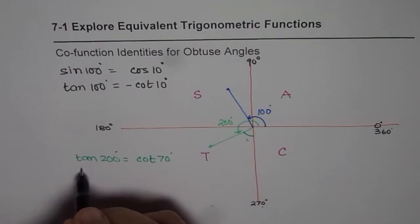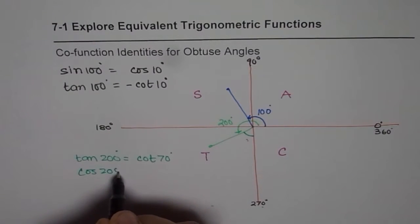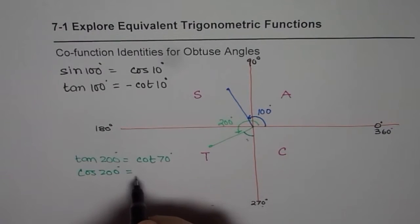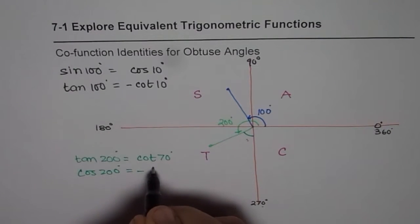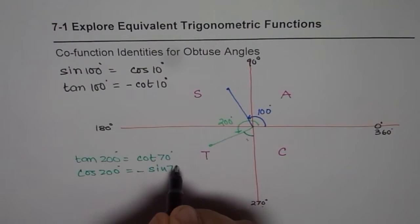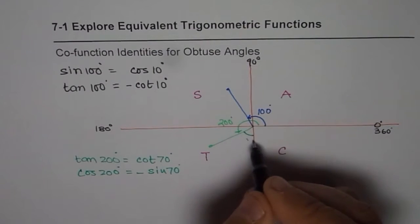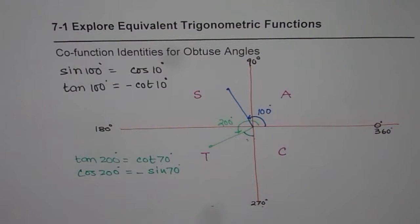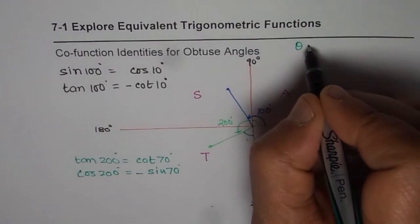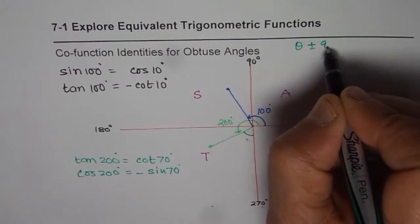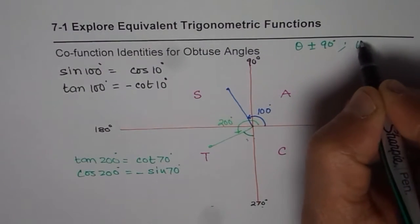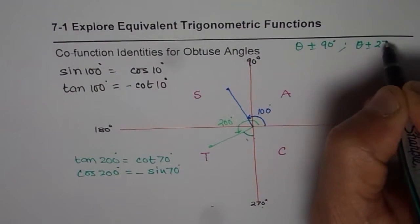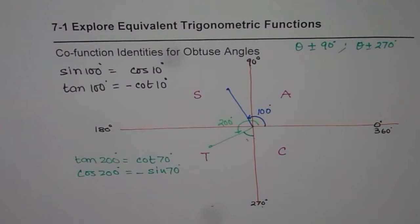But if I have cos of 200 degrees here, cos is negative. So we are looking for a negative answer for sine of, of course, 70 degrees, right? Because that makes 270. So whenever we are talking about co-function identities, we are doing theta plus or minus 90 degrees, or we are doing theta plus or minus 270 degrees, correct? That is what it is.